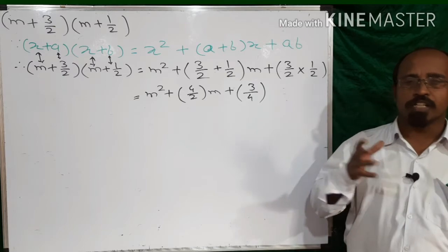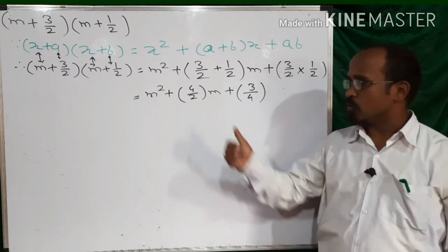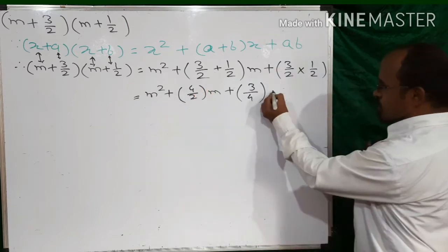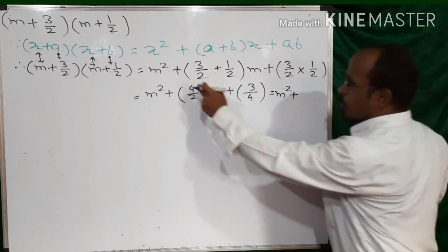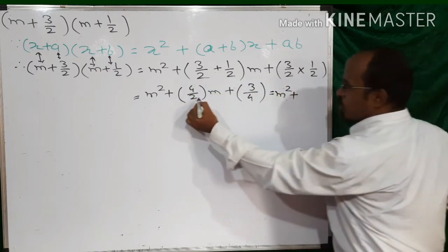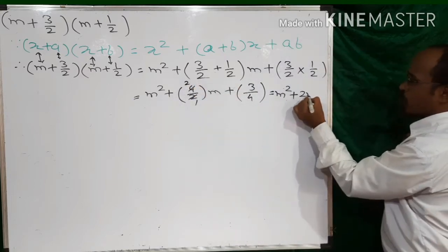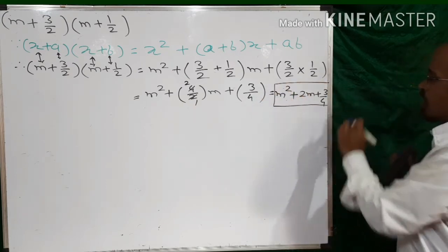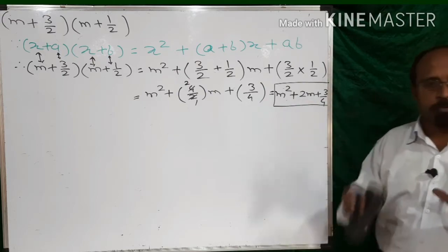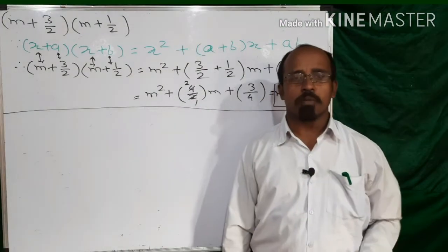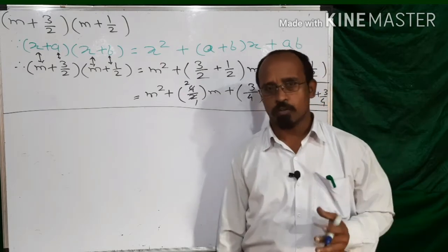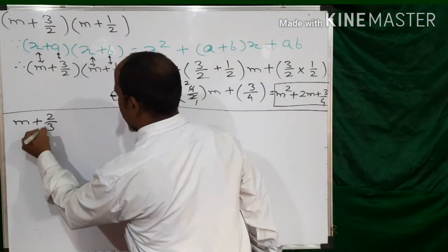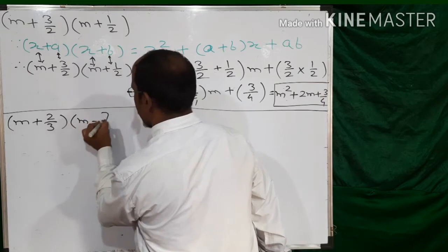But we know the test of divisibility — wherever possible we can simplify. 4/2 can be simplified: both are divisible by 2, so 4/2 = 2. So our final answer is m² + 2m + 3/4. Now let us solve question number 7 of practice set 5.1 of Maharashtra State Board Standard 8 Expansion Formula: (m + 2/3)(m − 7/3).